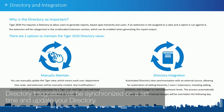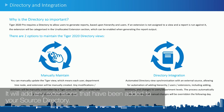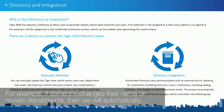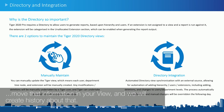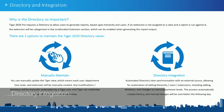Directory integration will synchronize on a set time and update your directory. It will add any new users you add to your source directory, add any extensions that have been added to your source directory, and do any moves and changes that may have been done in your source directory. For example, if someone changes their name or moves departments, we will automatically move that information in your view and we will create history about that. There is also a way to do a manual refresh of directory integration, which we will go through as part of this session.